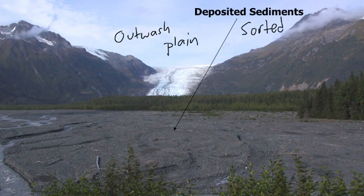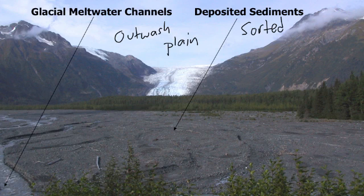The difference between outwash and till: till is unsorted sediment carried by a glacier, and a moraine is a pile of unsorted sediment. Outwash is sorted sediment, and an outwash plain is a field of sorted stuff. A moraine is more of a hill of unsorted sediment. We also have a meltwater channel — the glacial meltwater is what actually does the sorting.